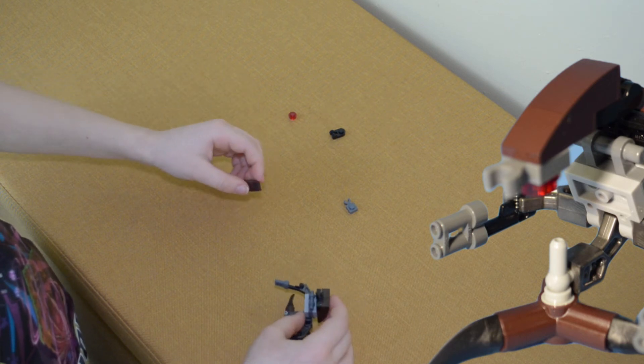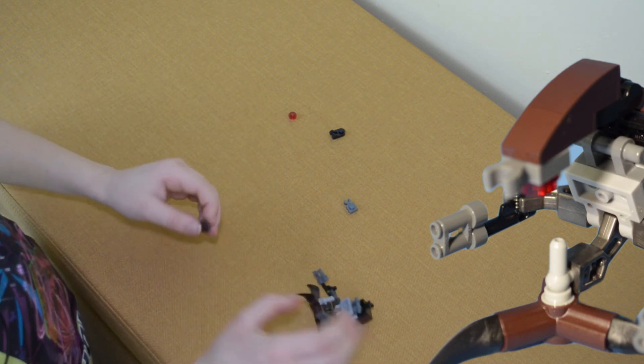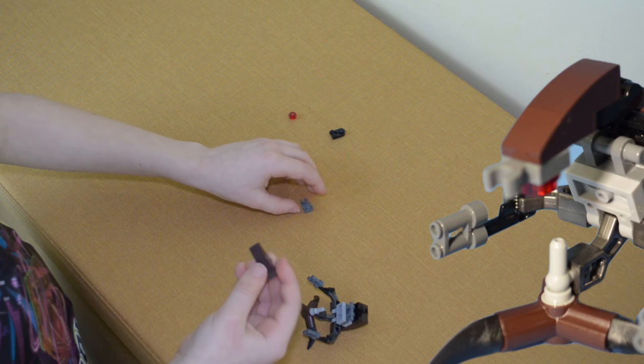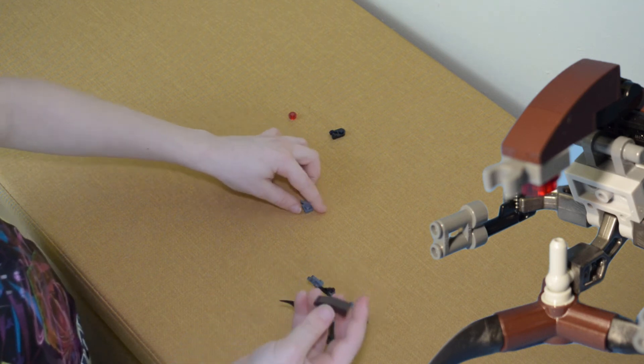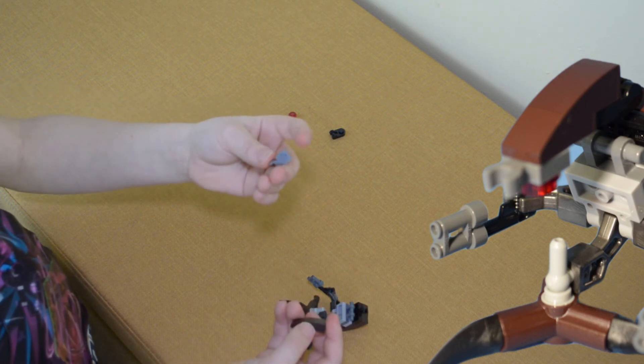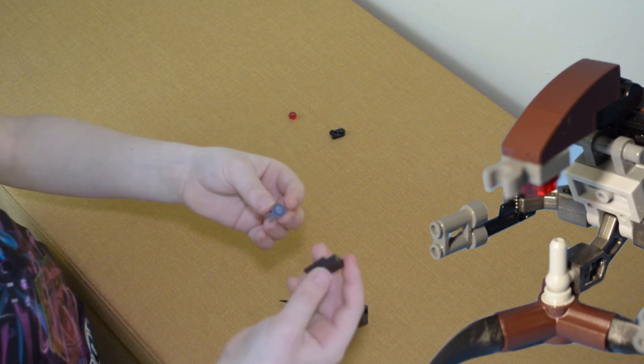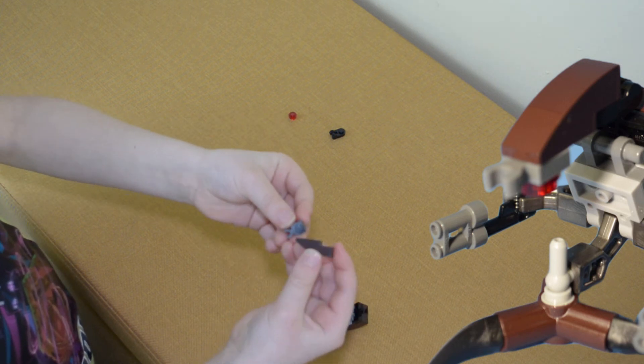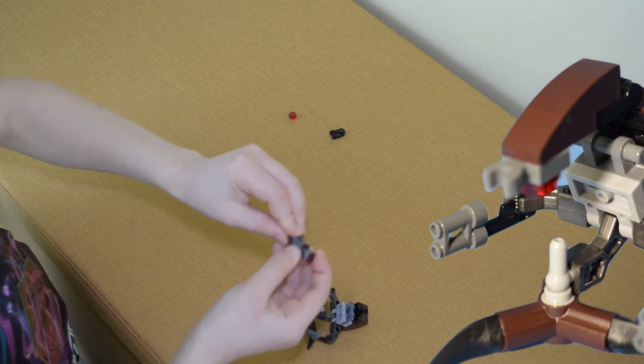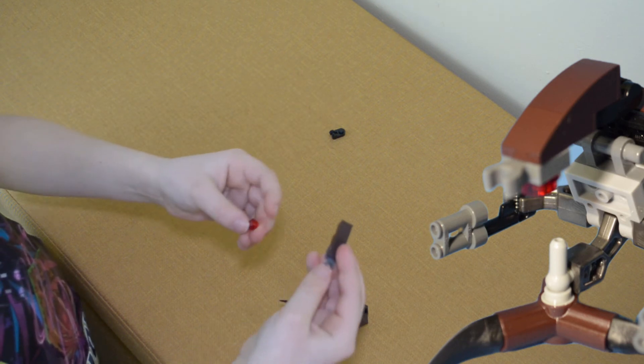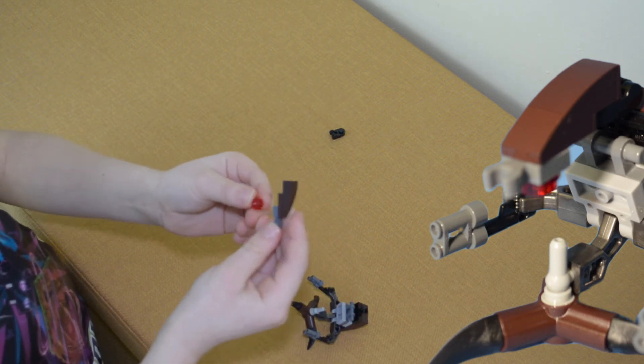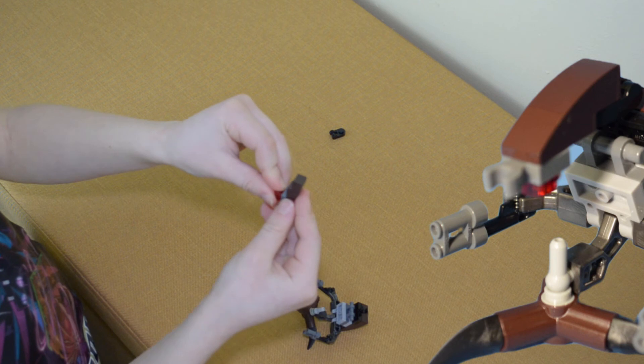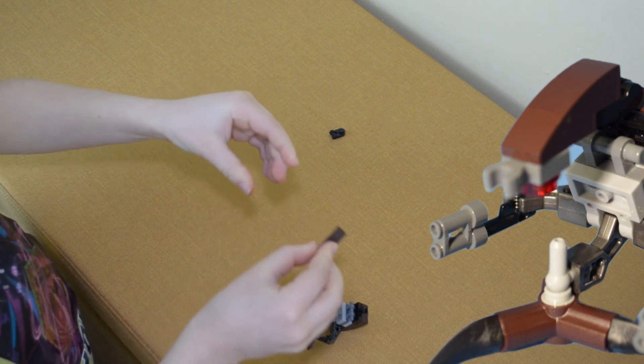His head is the last final thing we will need. To make his head, grab another one of these, grab one of the clippy pieces and stick that on there. You can see just like that. Then grab one of these little headphone round pieces and just clip that on there. So then you've got that.